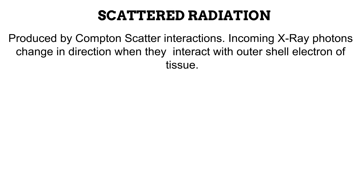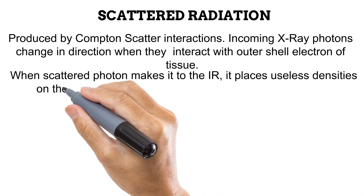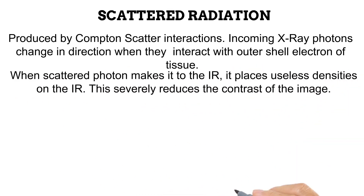Because the scattered X-ray photon is a deflected photon, it does not represent the anatomy it is coming from. Thus, whenever the scattered photons make it to the image receptor, they place useless densities on the radiographic image. These useless densities diminish the contrast of the radiographic image.